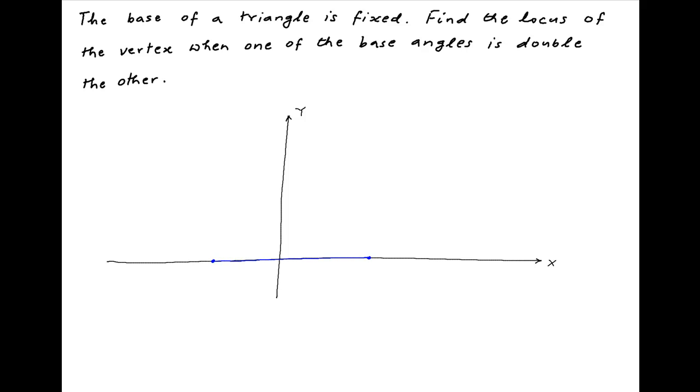Let's assume that the origin is the midpoint of AB through which the y-axis passes perpendicular to the x-axis. Therefore, the distance OA and OB are equal to a.